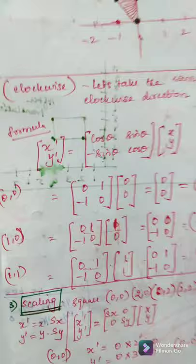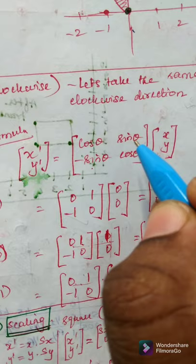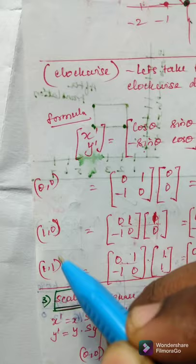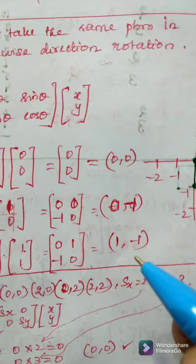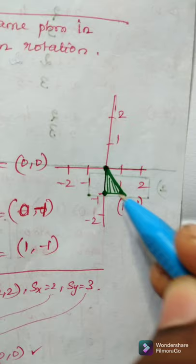Formula is little changing. The sine is changing in sine theta. Otherwise, other things are same. We are substituting the values for the given coordinates 0, 0, 1, 0 and 1, 1. And after multiplying, matrix multiplication, we are getting the points as 0, 0, 0, minus 1, minus 1. So, it falls in this quadrant. And the triangle will be in this shape. That is all about rotation.